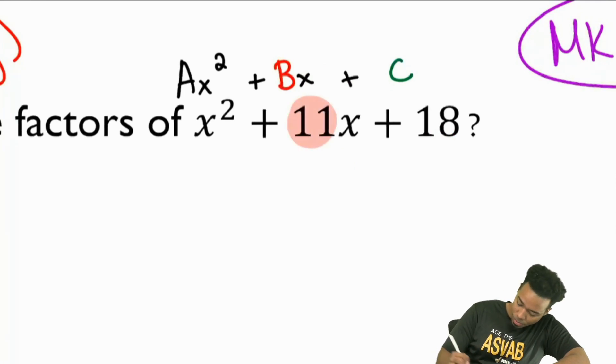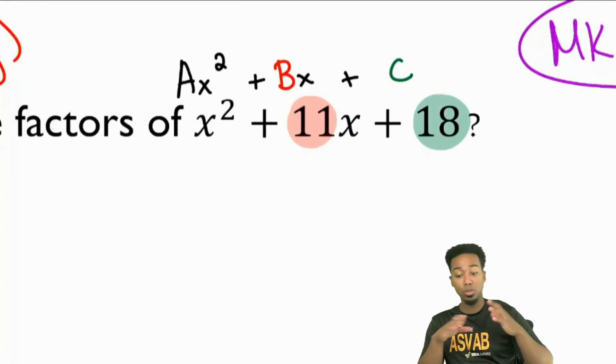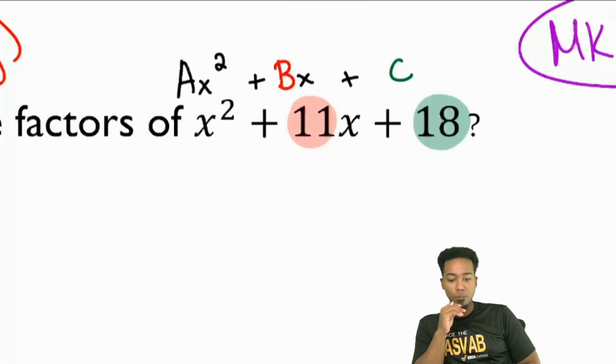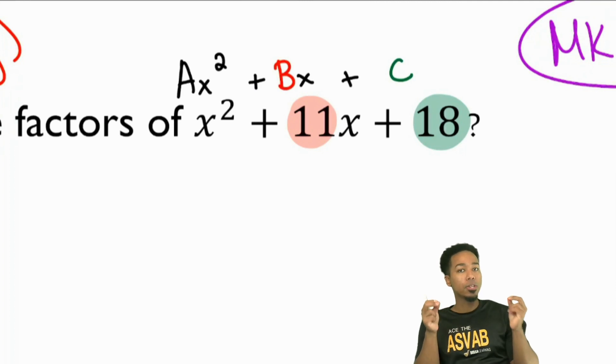Everyone, do you see the pattern that I'm showing here? Ax² plus Bx, 11x, plus C, 18. Is it clear to you that B is 11 and C is 18?